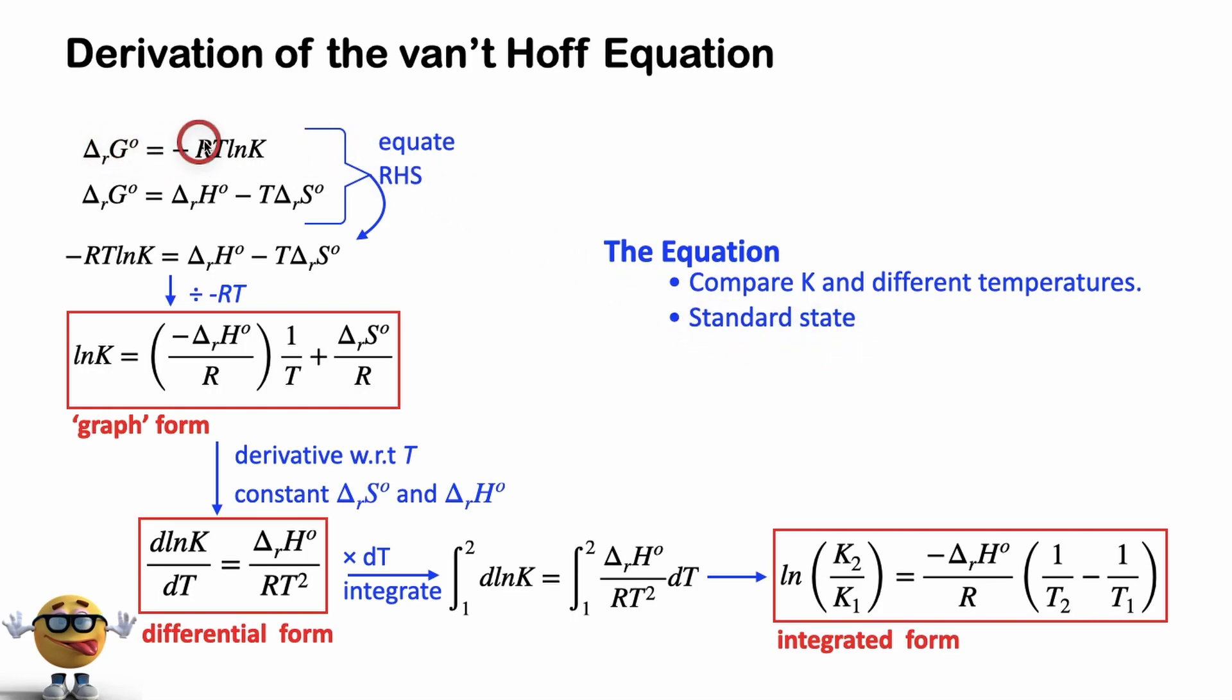And we're requiring that because of this equation right here. This has to be a standard change in Gibbs energy. We're also requiring that the change in entropy and change in enthalpy are temperature independent, so that we can do the derivative right here to get us this differential form. We're assuming, of course, PV work only, so no electrical or other types of work, and for a closed system.